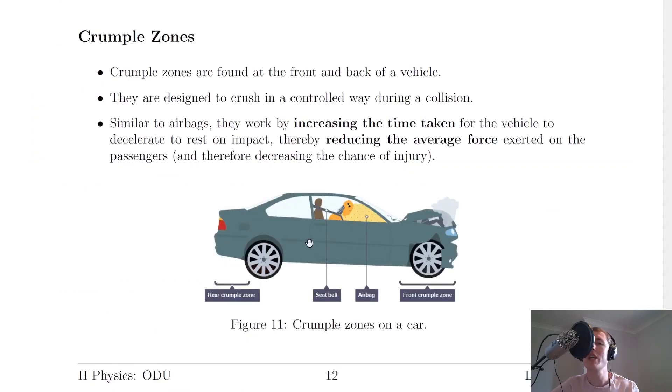The last example to look at is crumple zones, and crumple zones act in a very similar way to airbags. So crumple zones are found at the front and back of a vehicle. So there's our front crumple zone, and there's our rear crumple zone. You'll see the front crumple zone in this example has done its job.